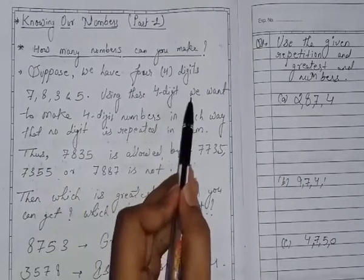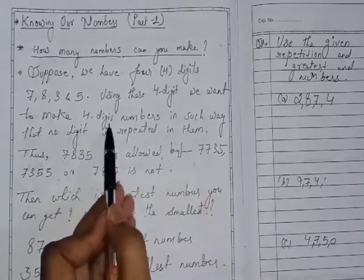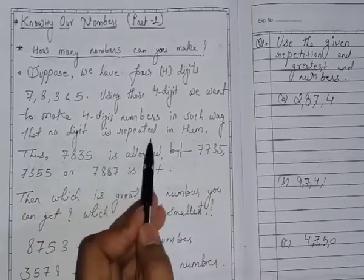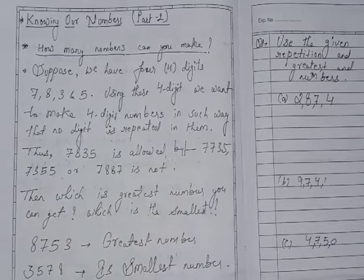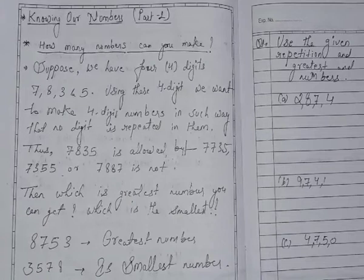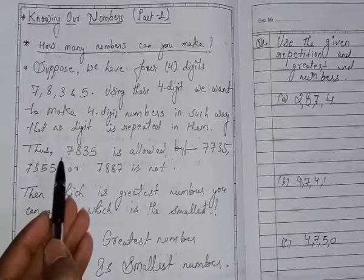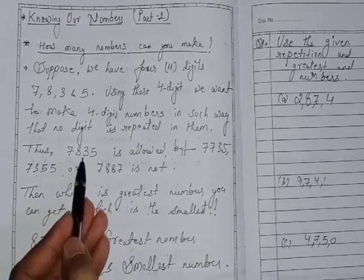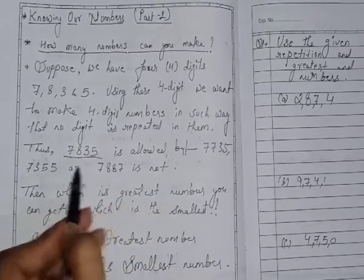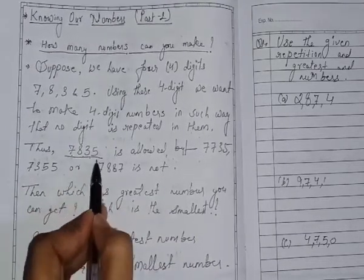Using these 4 digits we want to make 4 digit numbers in such way that no digit is repeated in them. It means we have to make numbers in which digits should not repeat. Like 7835 is allowed. For example, this number is allowed because no digit is repeated.